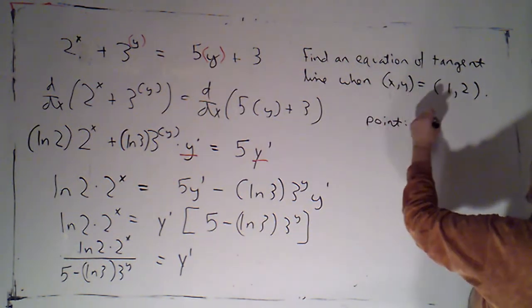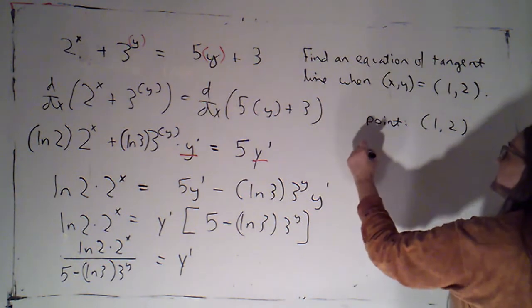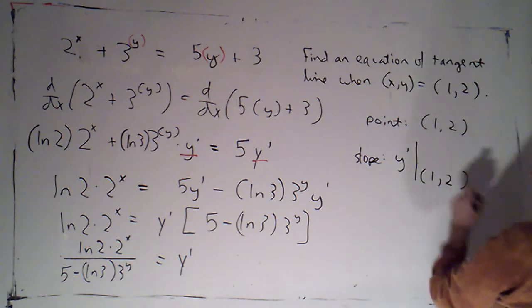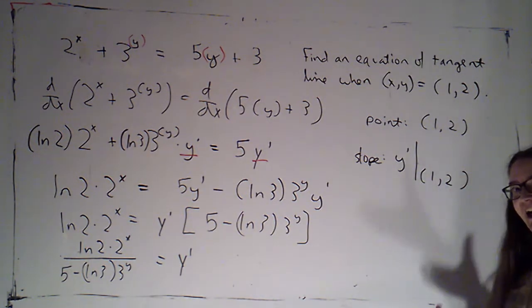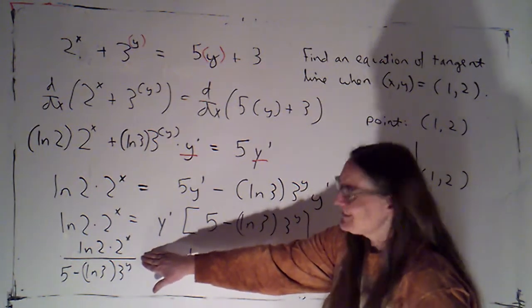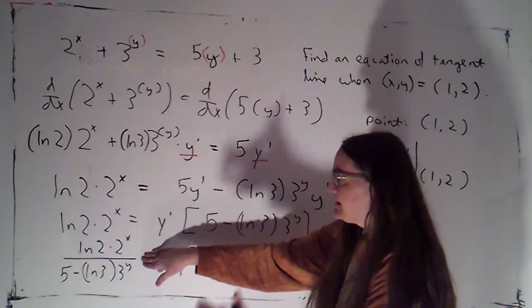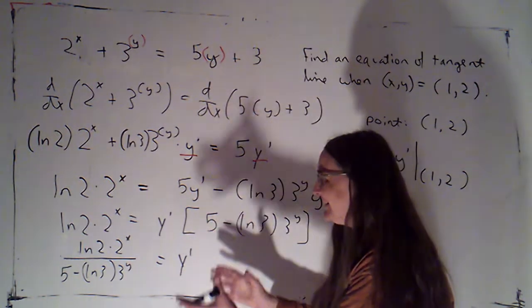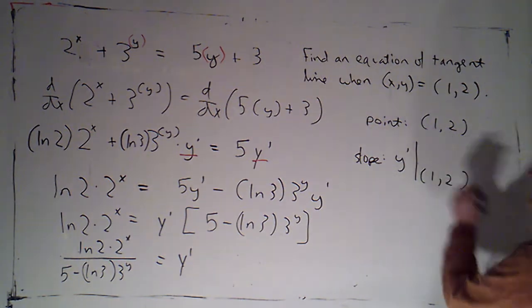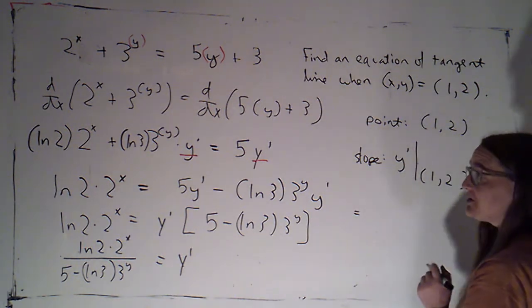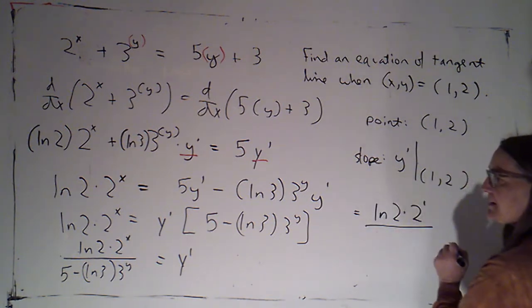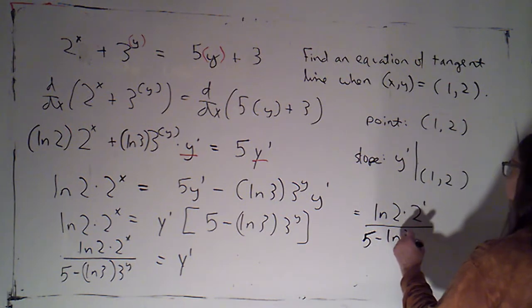I want to now get the equation for this tangent line. So the point was given. The slope, make sure that's y prime evaluated at 1, 2. The slope of a line is a constant. It's just a number. That's not a number. That's a really messy formula for something, which probably implicitly is a function, but may itself not be a function. I need to plug in 1 for x and 2 for y. So this is the natural log of 2 times 2 to the first over 5 minus the natural log of 3.